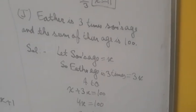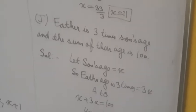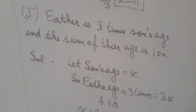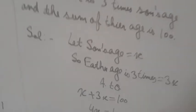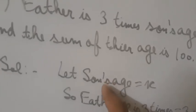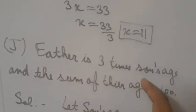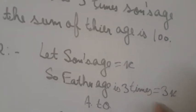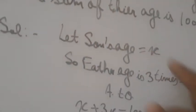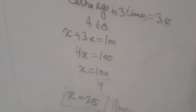Now the last part: 'Father is 3 times son's age and the sum of their ages is 100'. I've done almost all parts for you; only part H is left for you to try yourself. Let son's age be x. Father's age is 3 times, so 3x. Sum of their ages: x + 3x = 100.